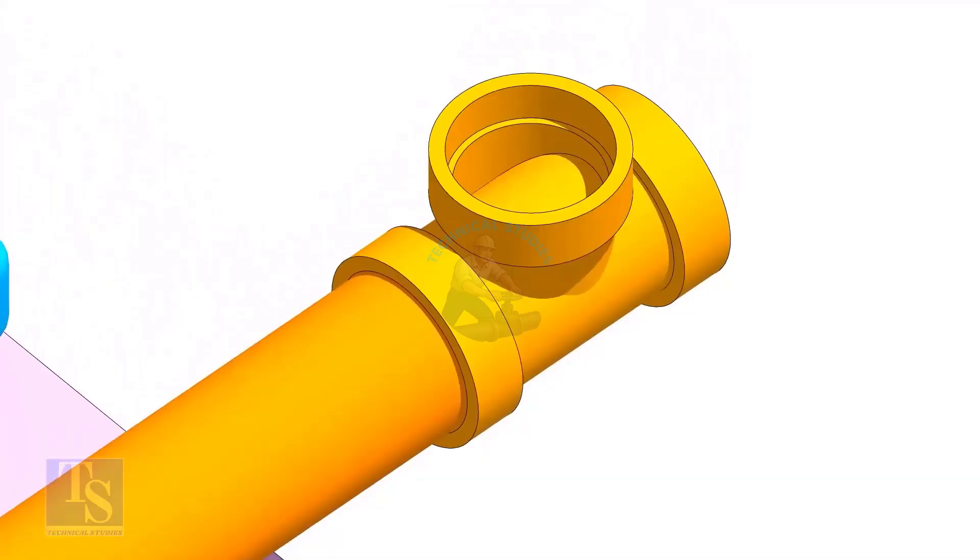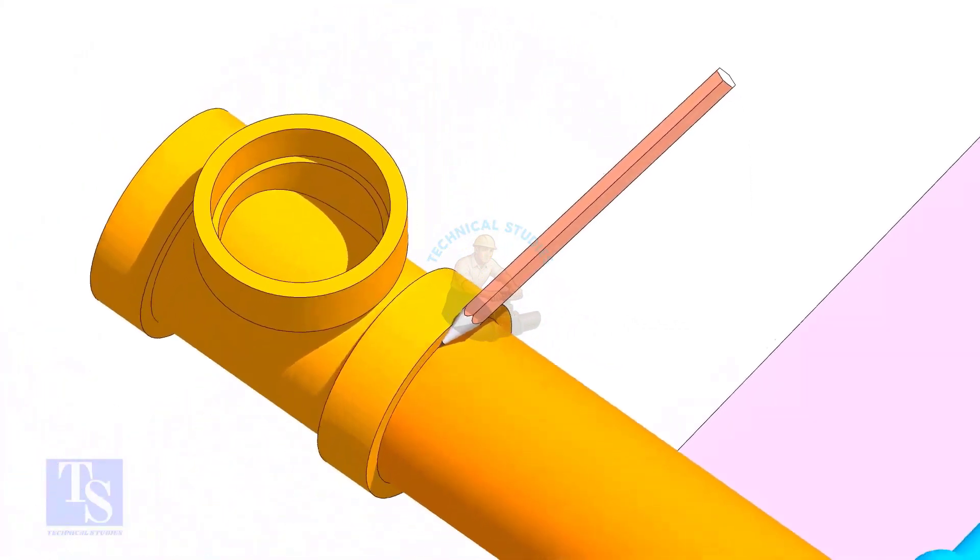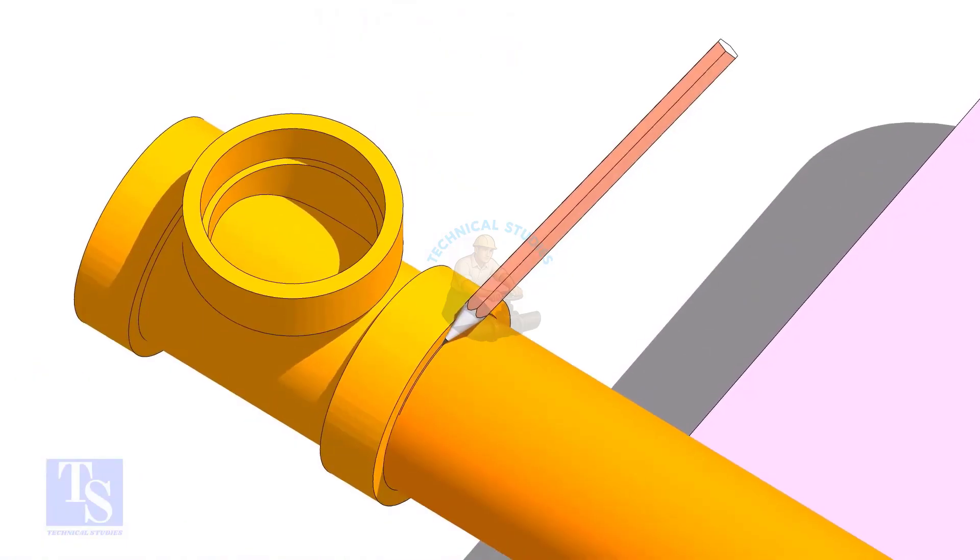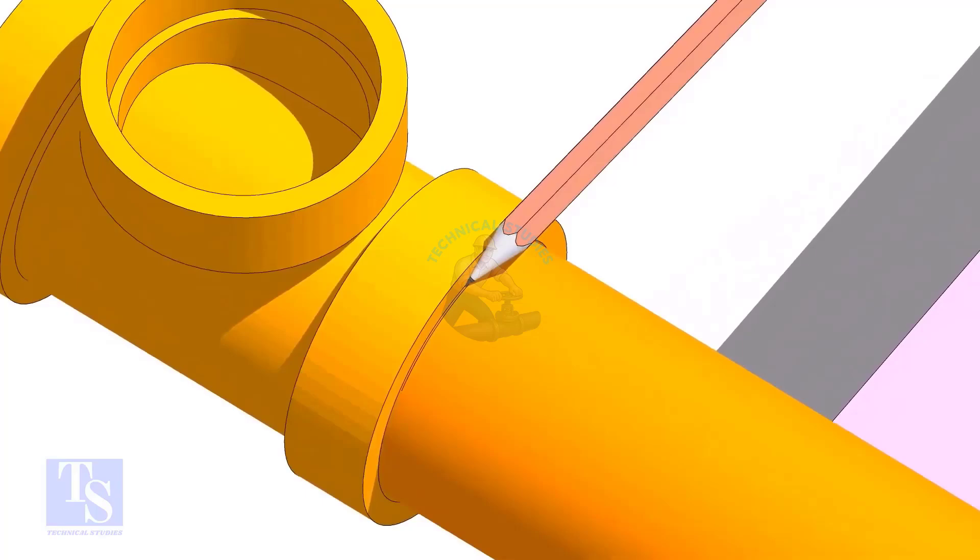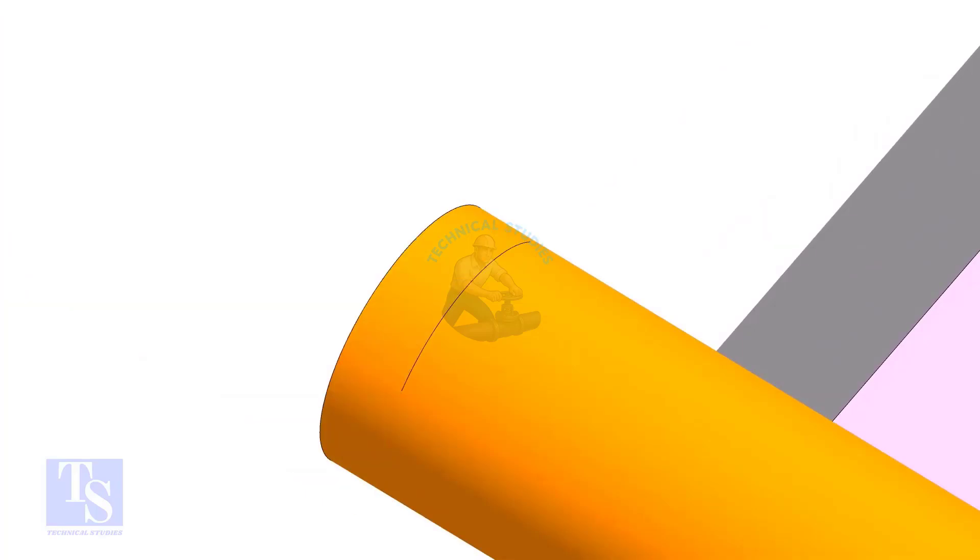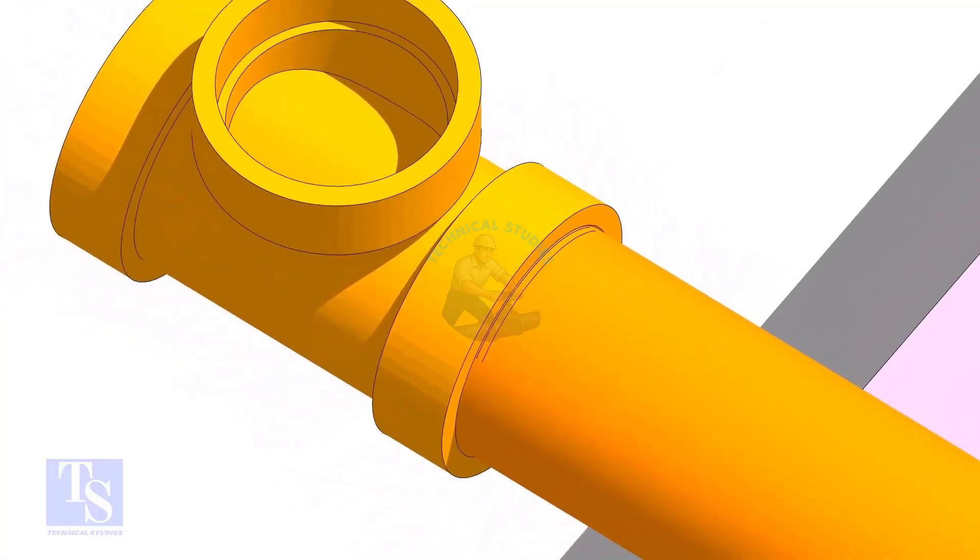Hold the tee firmly and straight, and mark a line on the pipe as shown. Now move the tee away and mark another line approximately 1.5mm away from the first line.